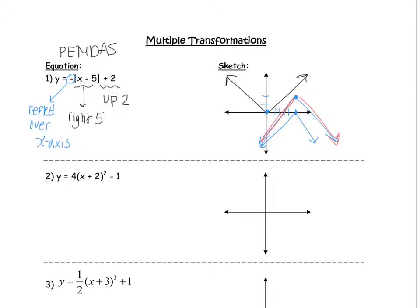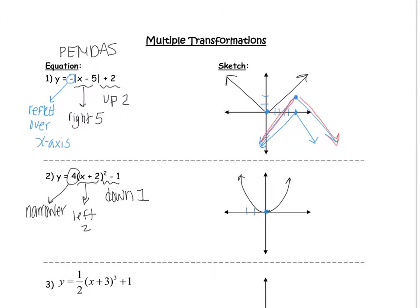For example two, we have a four on the outside, a two on the inside, and a negative one on the outside. The negative one means to go down one. The positive two on the inside tells us to go to the left two. And the four, being greater than one, tells us to become more narrow. Graph the basic quadratic, move the vertex left two and down one, and make it skinnier. That's our function.